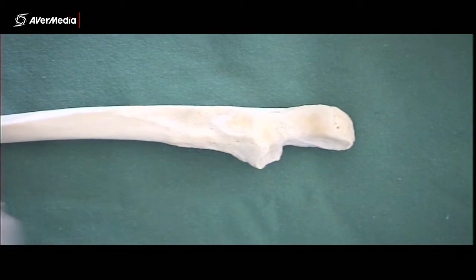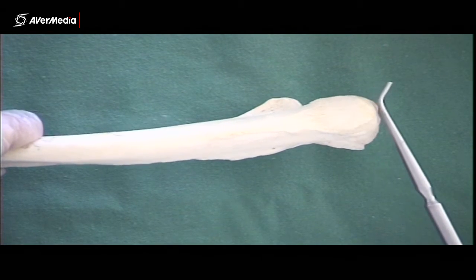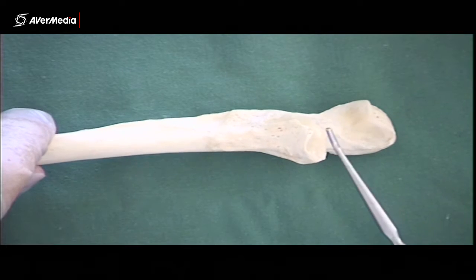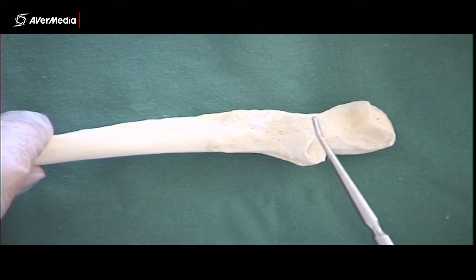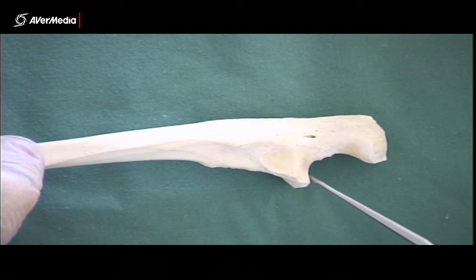Now if we have a quick look at the proximal ulna, here firstly on the posterior aspect, we can see the olecranon. Then if we turn around to an anterior point of view, we can see the coronoid process, but of course if we have a lateral point of view, we can see it more clearly.